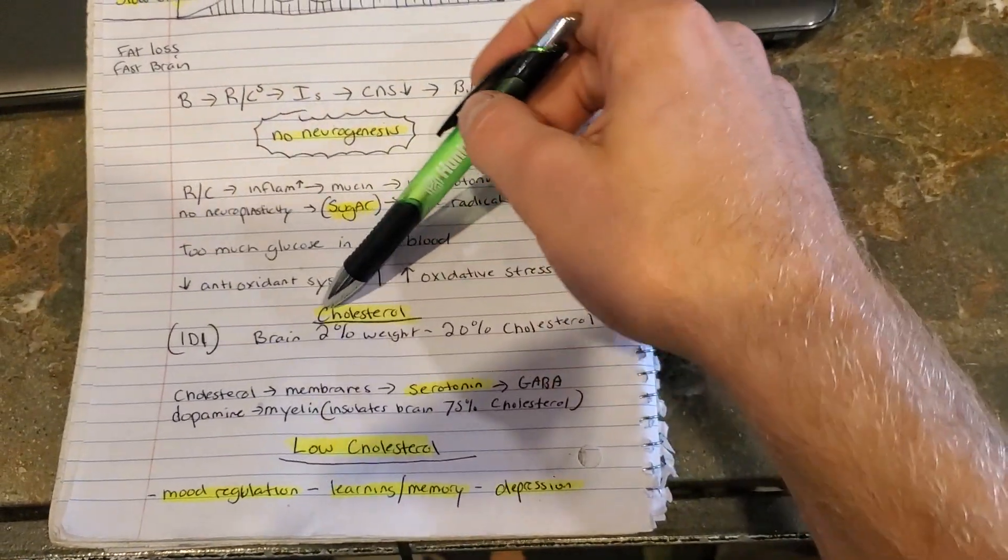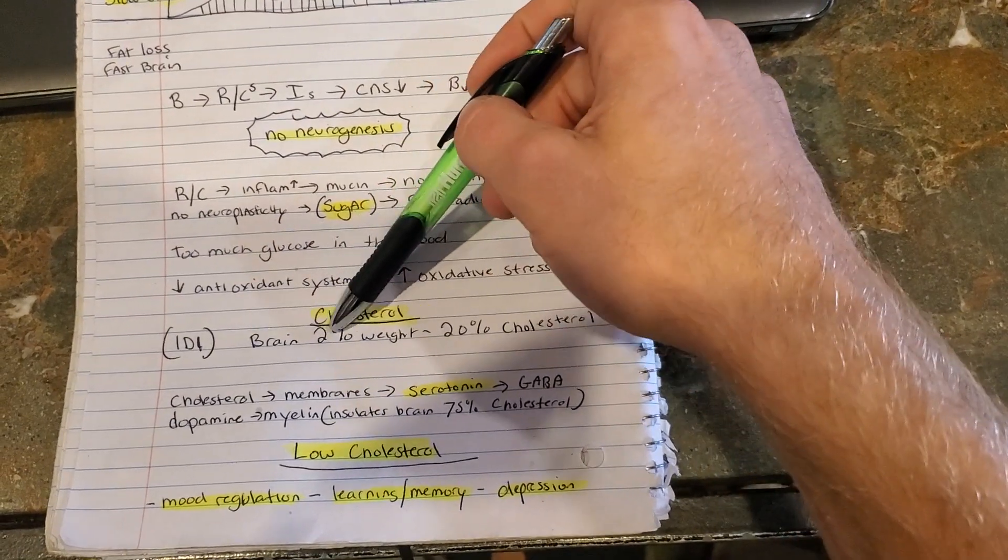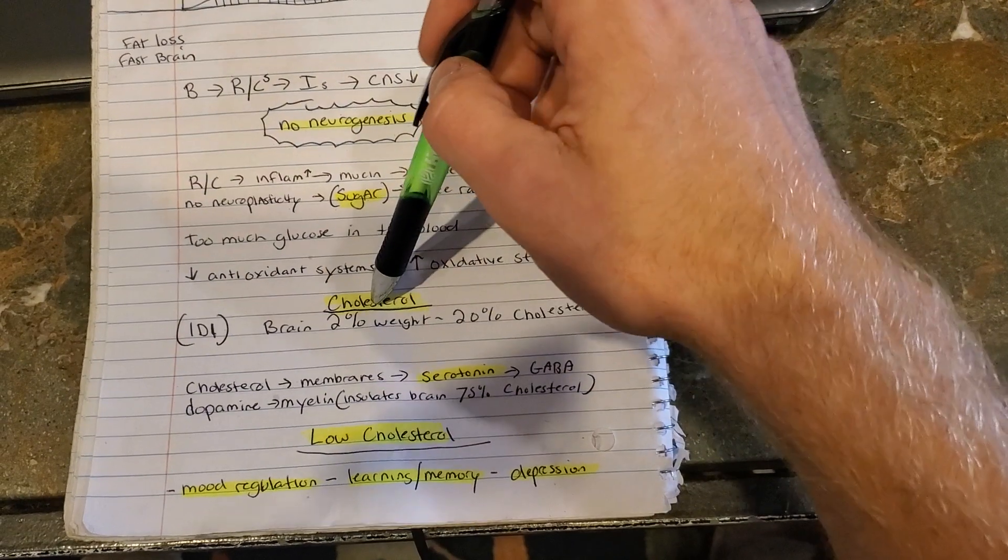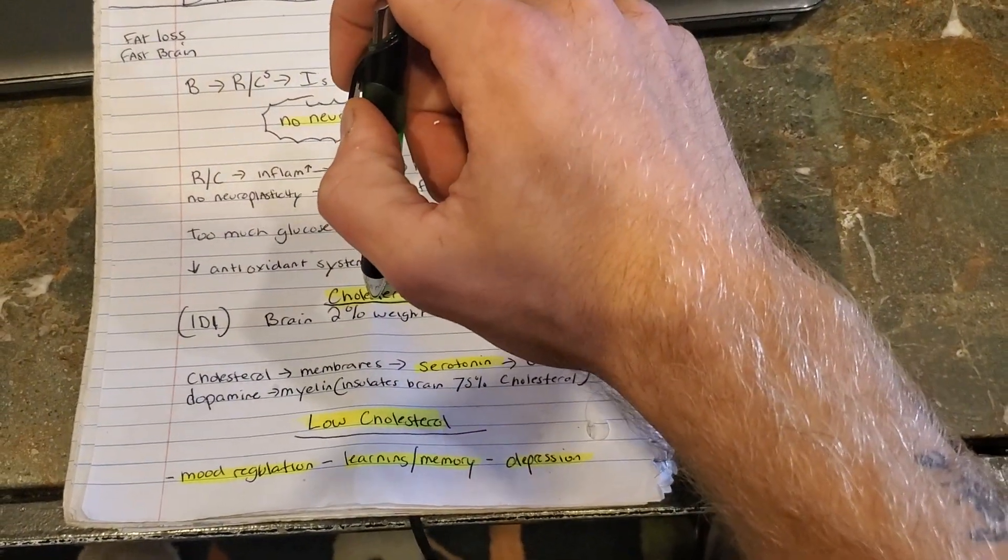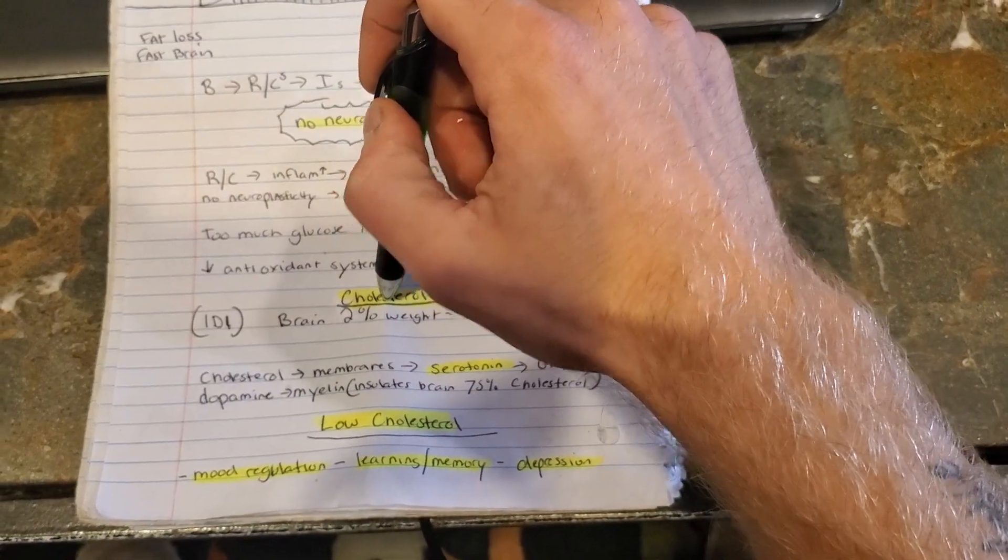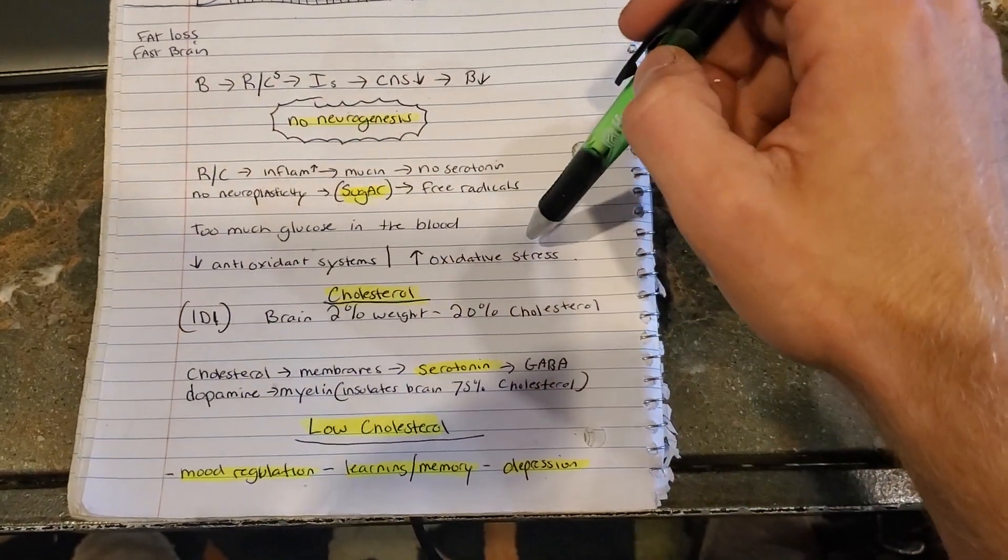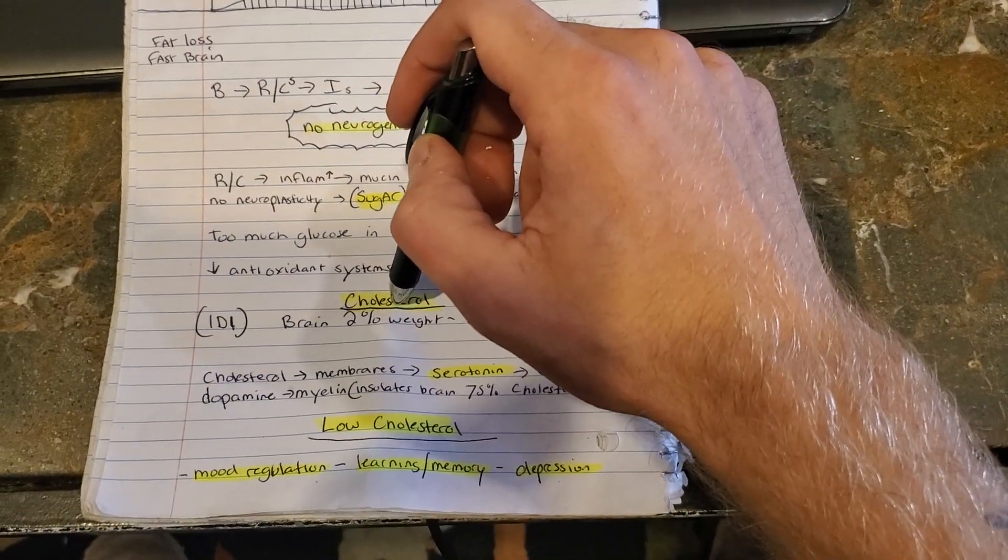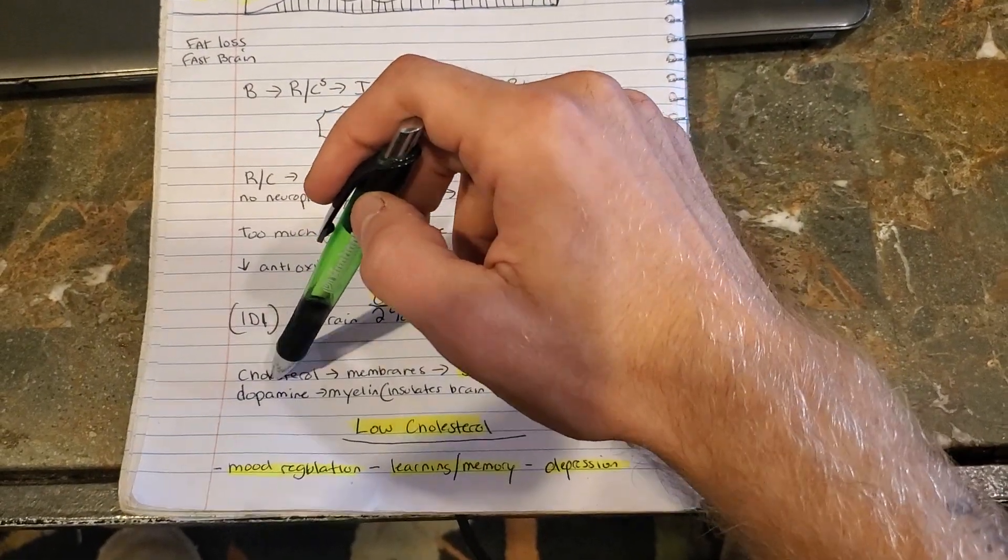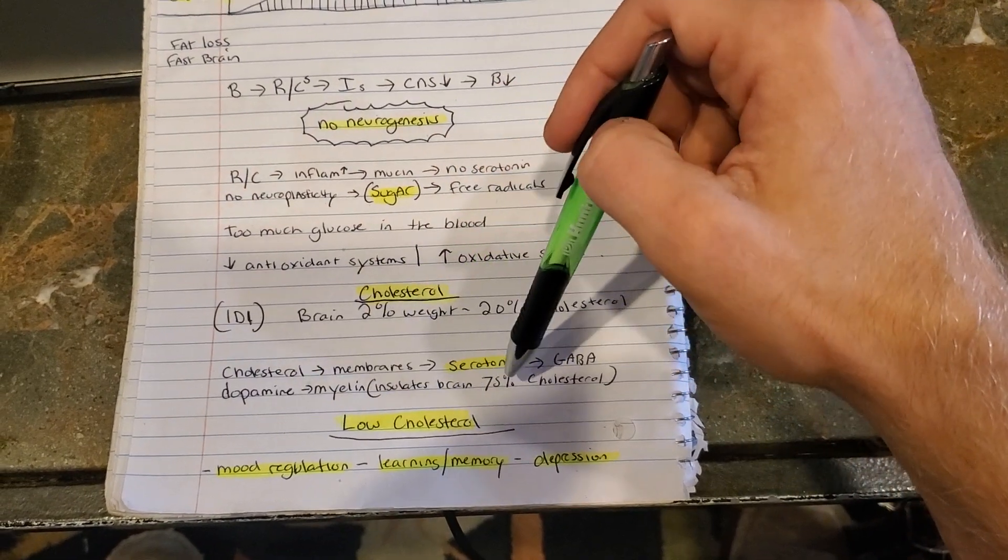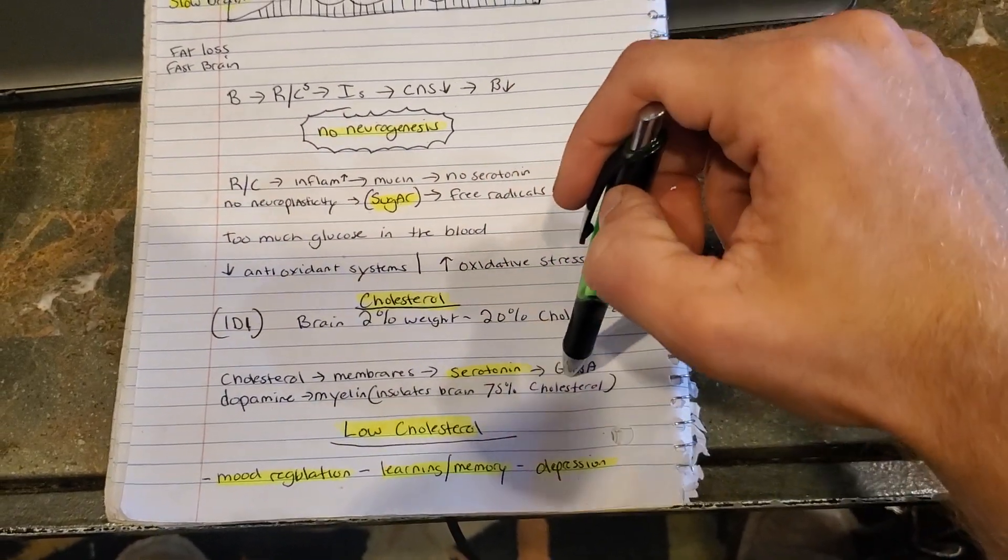So now when it comes to cholesterol and oxidative stress, your brain's 2% of your body weight, but takes 20% of your overall cholesterol in your body. So how cholesterol works, say you eat 40% of your daily value of cholesterol, your body's going to produce the other 60%. Say you eat 20%, your body's going to produce 80%. So cholesterol is always floating around in your body. Now the bad part of this is cholesterol membranes, serotonin, GABA, dopamine, myelin sheath insulate, 75% of your cholesterol.